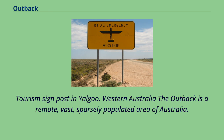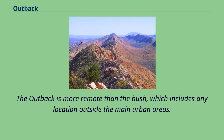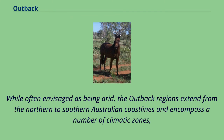Tourism signpost in Yaugu, Western Australia. The outback is a remote, vast, sparsely populated area of Australia. The outback is more remote than the bush, which includes any location outside the main urban areas.